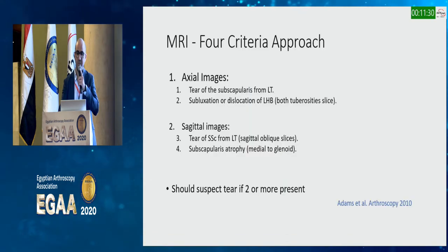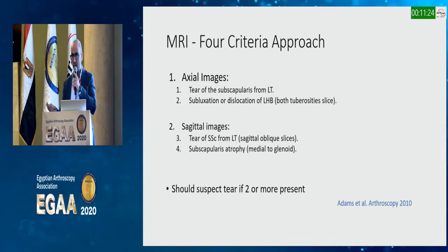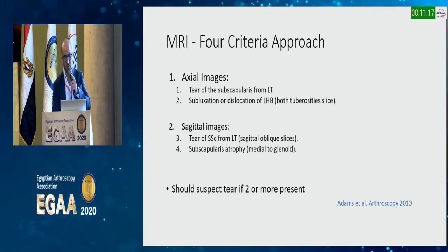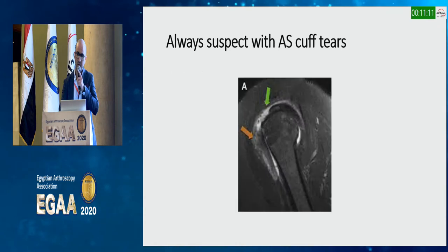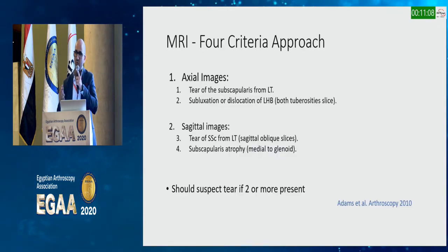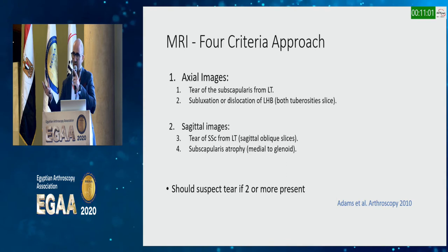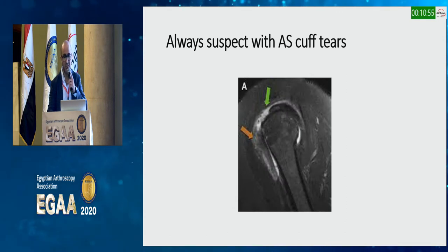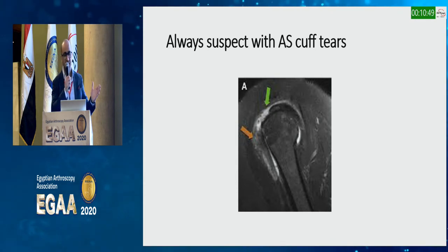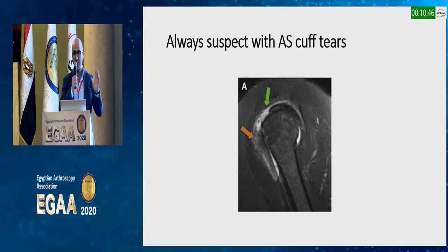You only find these findings in large, massive traumatic tears. To try to improve sensitivity, Dr. Chris Ahmad and Dr. Burkhart came up with a four-criteria approach — if you find any two of these criteria the patient probably has a subscap tear — but it's still not very sensitive. On MRI, if I find an antero-superior cuff tear involving the anterior part of the supraspinatus, I always suspect a subscap tear as well.